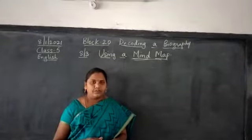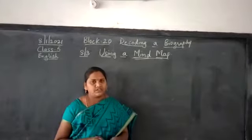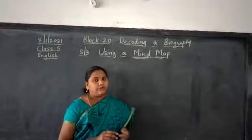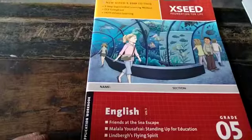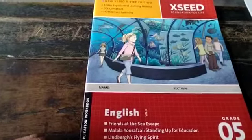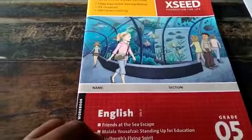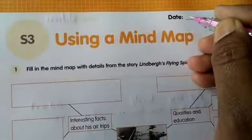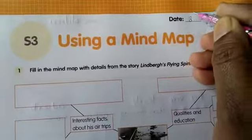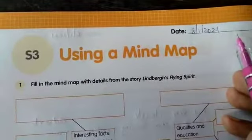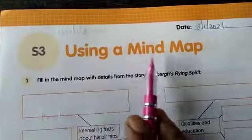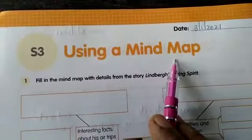So open your workbook. We will see directly the mind mapping in the workbook for Lindbergh's flying spirit. Open your workbook children. Block number 20, S3. Write the date as 8-1-2021. S3: Using a Mind Map.